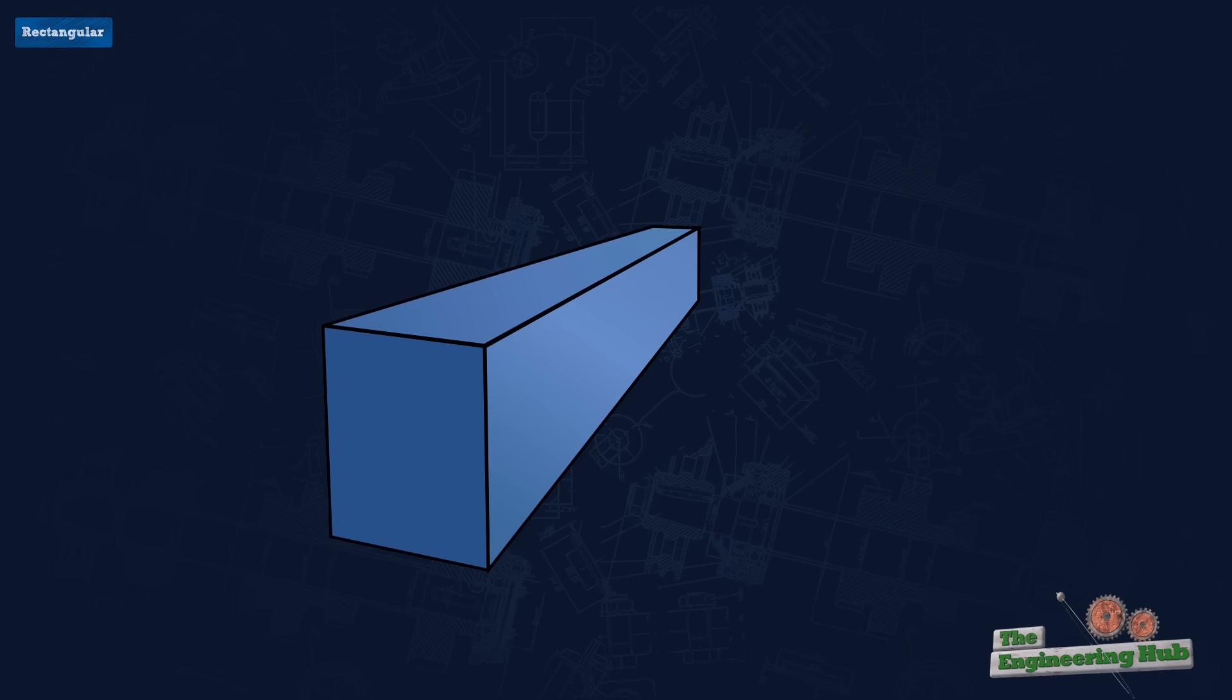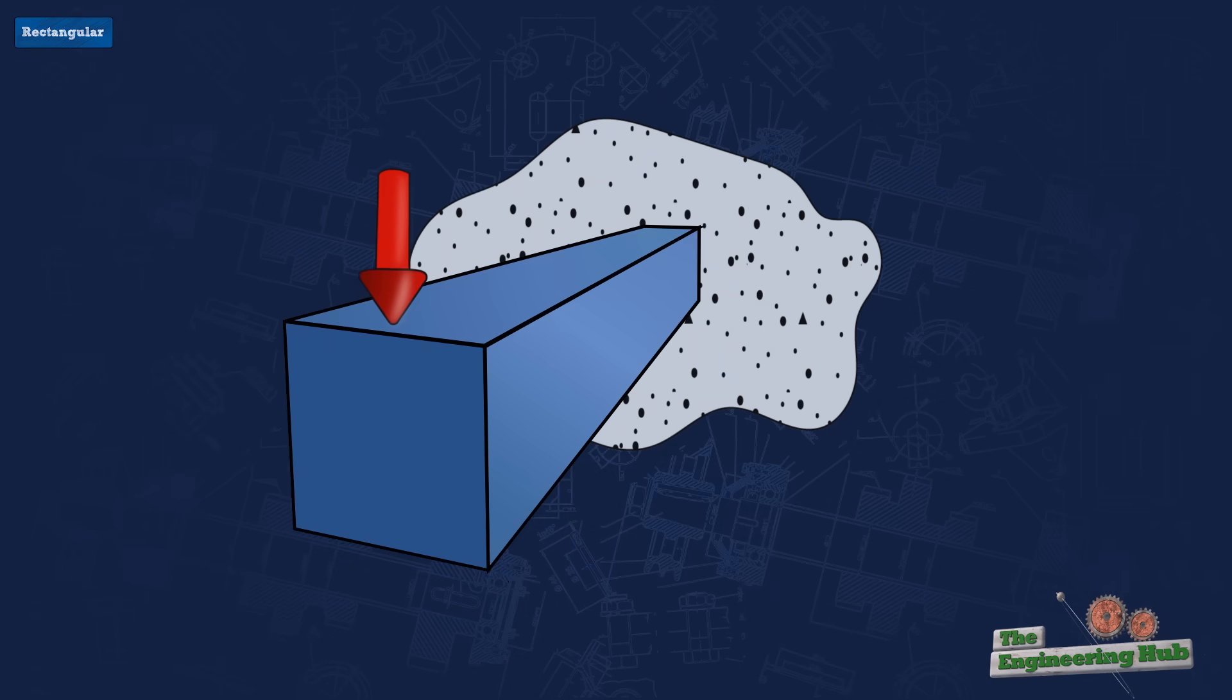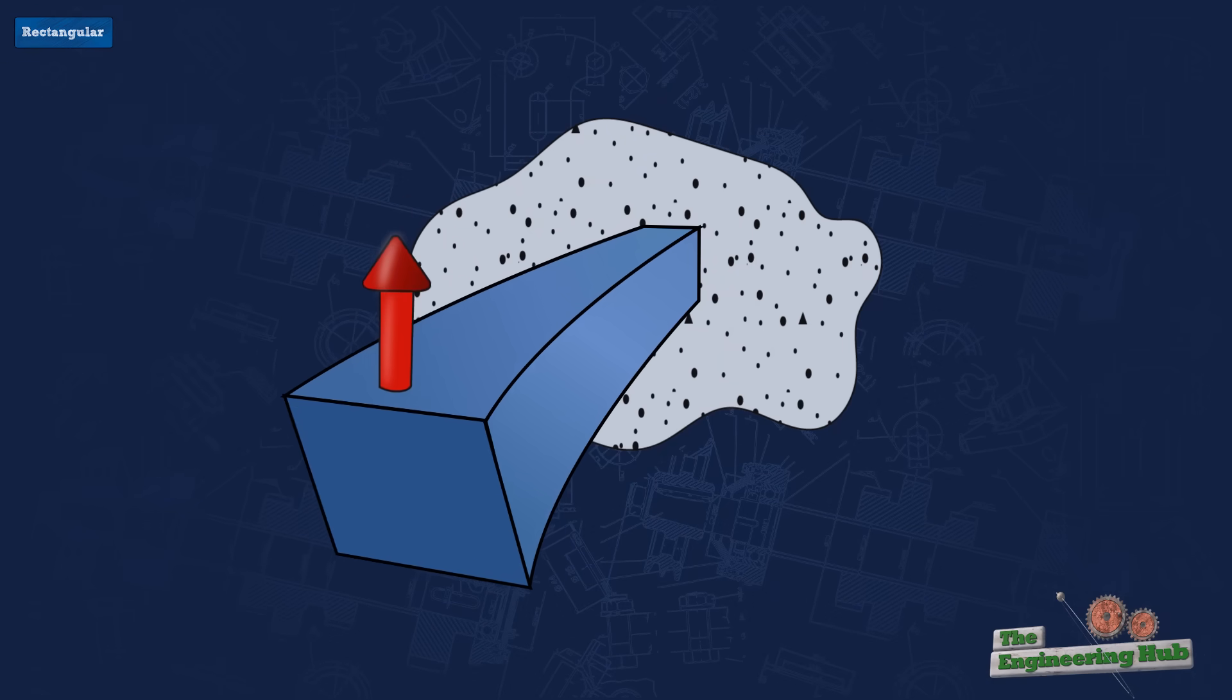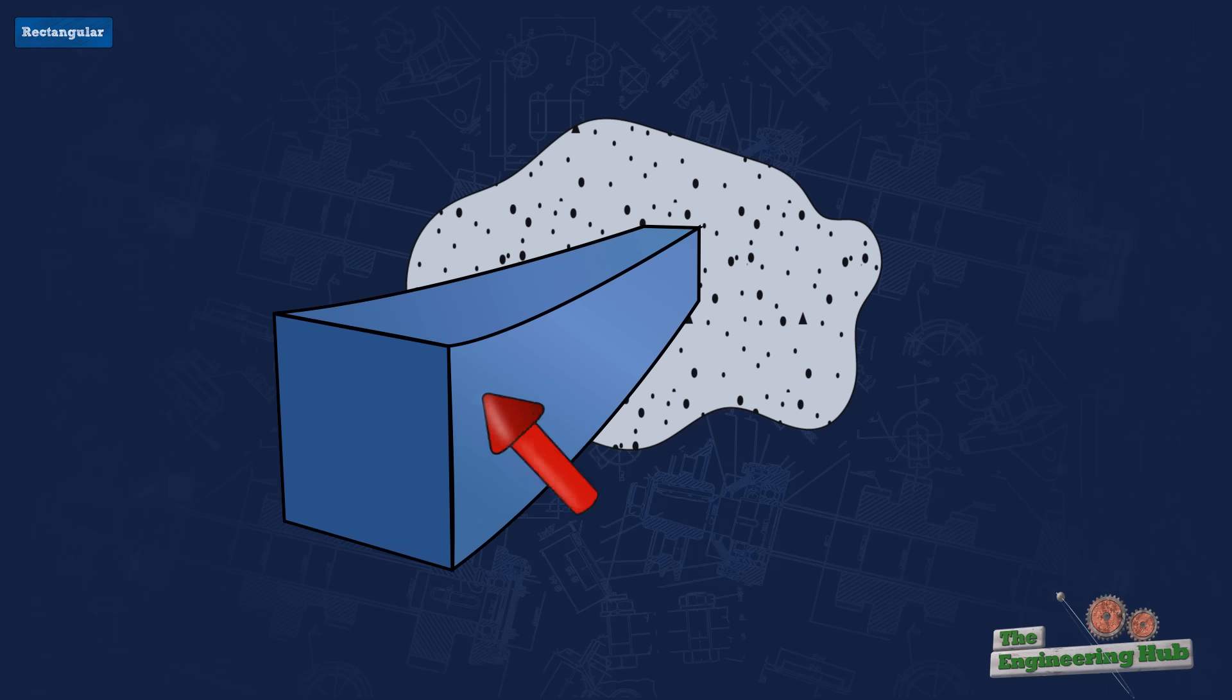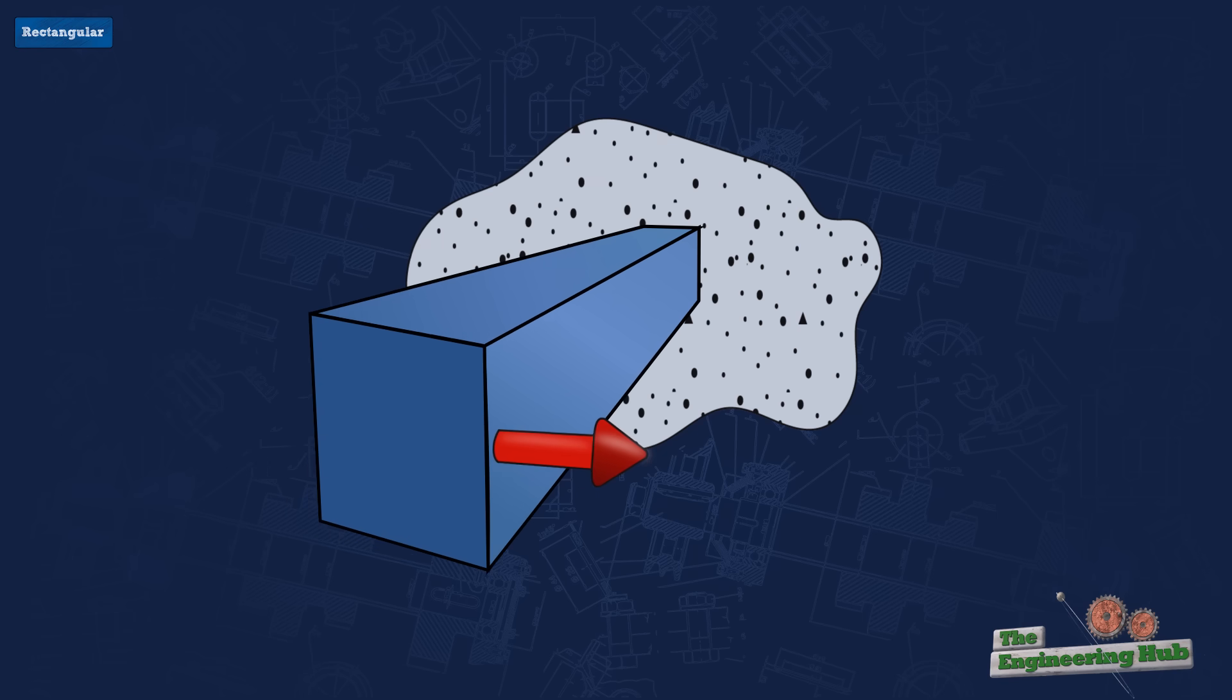The same comments as rectangular apply to square, but square has a bit of additional advantage on symmetry, and thus is good for conditions where loads of similar magnitude are applied on both axes, so similar strength would be needed for loading in both directions.